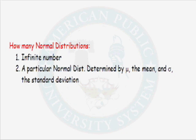A particular normal distribution is determined by mu, which is the mean of the distribution, and sigma, the standard deviation of the distribution. So if you know mu and you know sigma for a normal distribution, you have defined a particular normal distribution, and you can do a probability calculation on that.